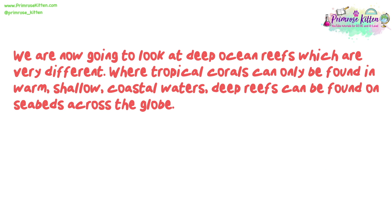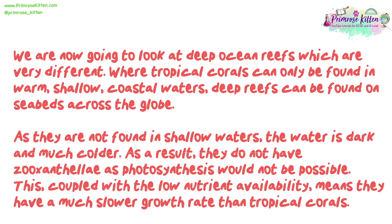We are now going to look at deep ocean reefs, which are very different. Where tropical corals can only be found in warm, shallow coastal waters, deep reefs can be found on seabeds across the globe. As they are not found in shallow waters, the water is dark and much colder. As a result, they do not have zooxanthellae, as photosynthesis would not be possible. This, coupled with the low nutrient availability, means they have a much slower growth rate than tropical corals.